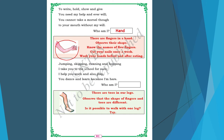Next riddle: Jumping, skipping, running and hopping — I take you to school for sure. I help you work and also play. You dance and learn because I am there. The answer is leg. There are toes in our legs. Observe that the shape of fingers and toes are different. Is it possible to walk with one leg? Think and tell me.